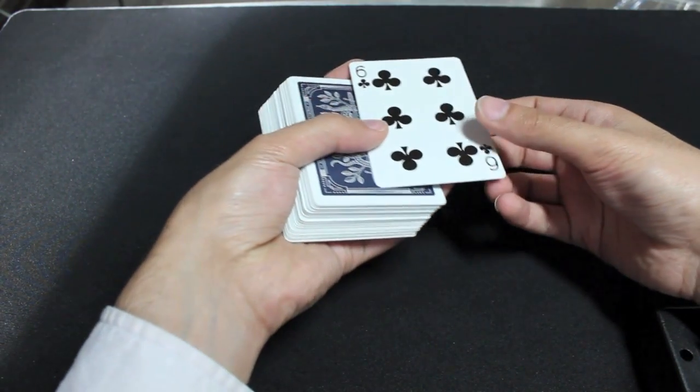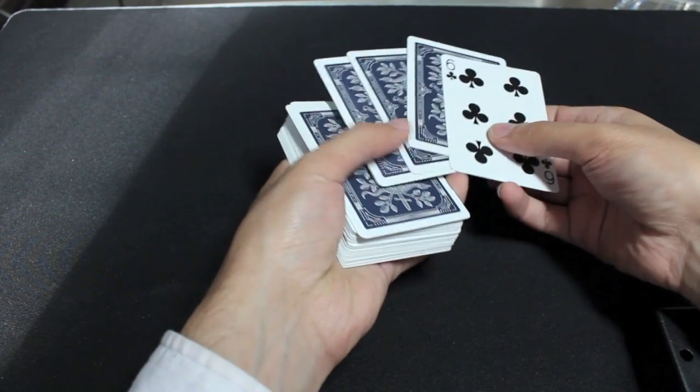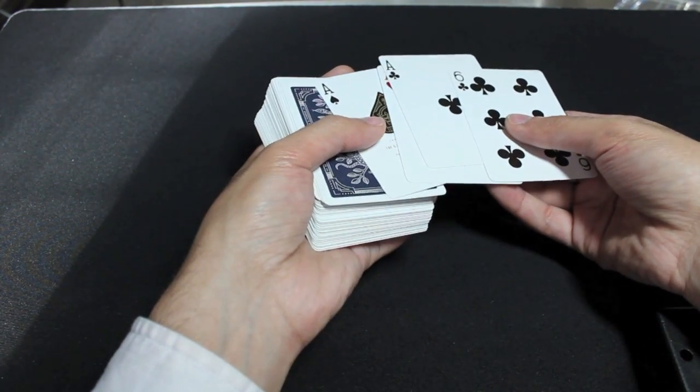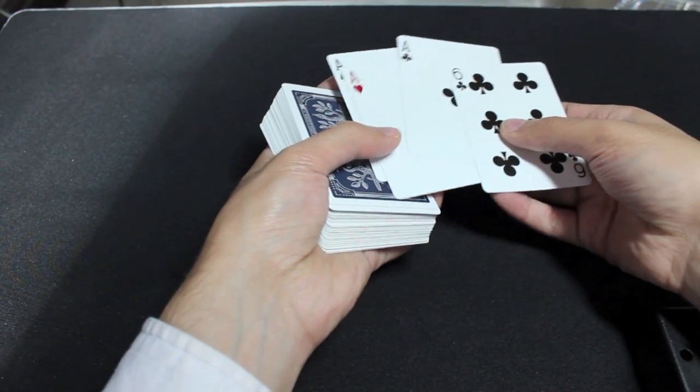Alright, so your current situation now is these three cards, which they think are the cards that you just showed them, are actually now the three aces. And then the fourth ace is right beneath them. Really cool switch, huh?